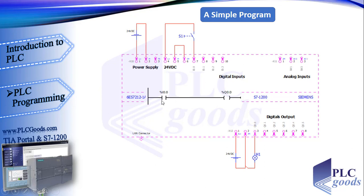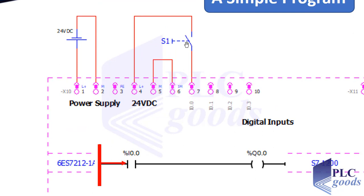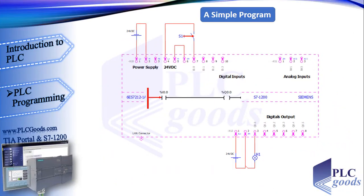How does a PLC execute this program? Suppose here is a virtual power line, so the power can reach to this contact. The address of this contact refers to a PLC input. So when this switch is pressed, 24 volts appear at the PLC input. Then in the program, the CPU makes this contact close. Now the power can reach to this output. Similarly, this address refers to my first output, so the PLC activates its first output, and thus makes the H1 lamp turn on.